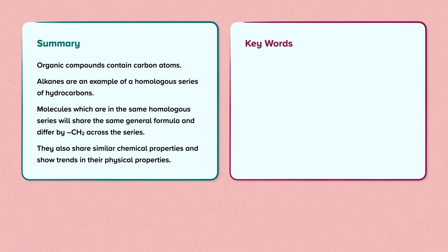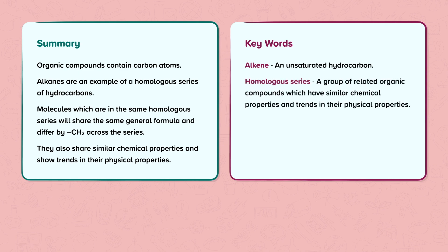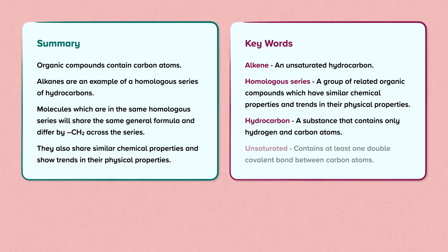Key words. Alkene: an unsaturated hydrocarbon. Homologous series: a group of related organic compounds which have similar chemical properties and trends in their physical properties. Hydrocarbon: a substance that contains only hydrogen and carbon atoms. Unsaturated: contains at least one double covalent bond between carbon atoms.